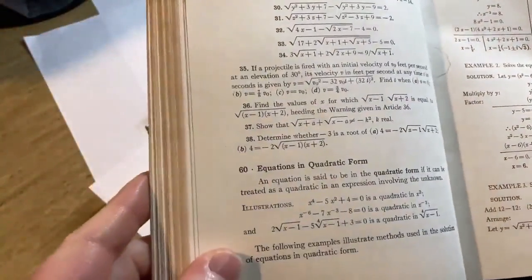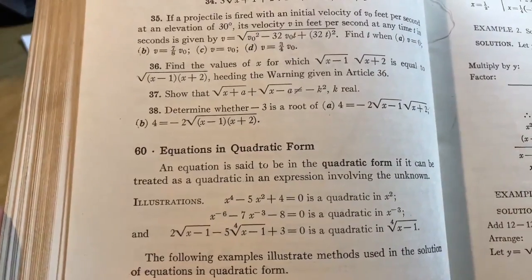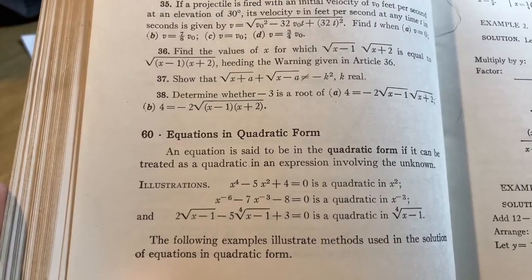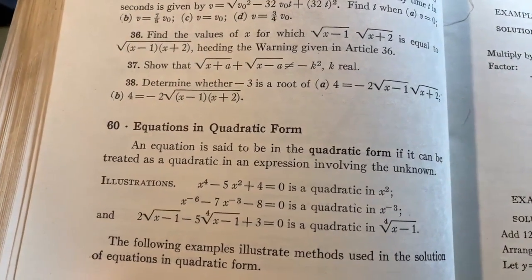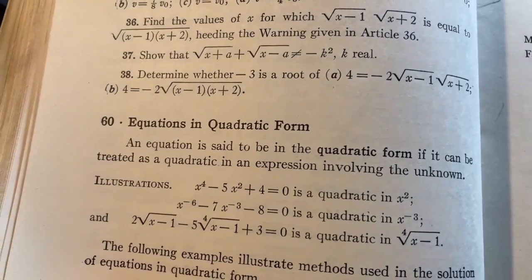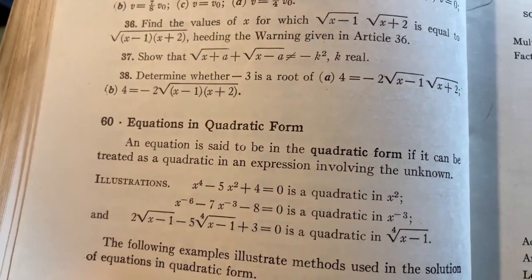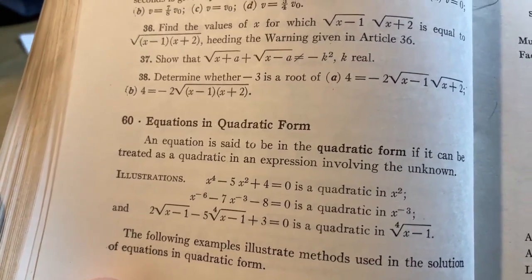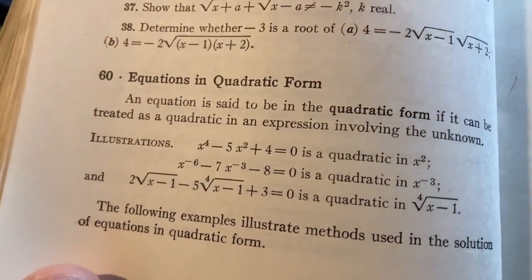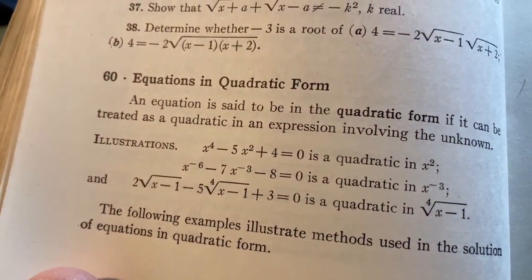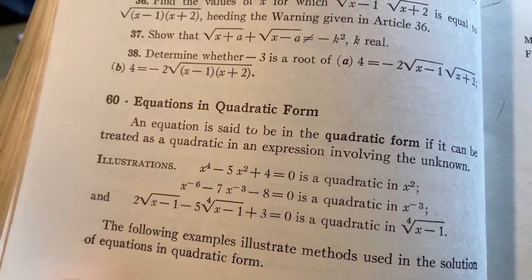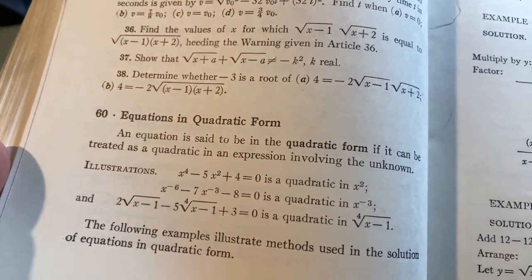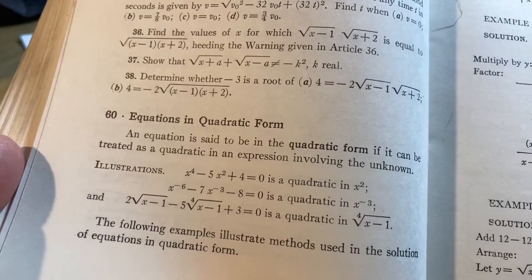So here we go. Equations in quadratic form. An equation is said to be in the quadratic form if it can be treated as a quadratic in an expression involving the unknown. Here we go. Here's some really good examples. x to the fourth minus 5x squared plus 4 equals 0 is a quadratic in x squared. Yes, it is. And oftentimes the method of solution here is to make a substitution. x to the negative 6 minus 7x to the negative 3 minus 8 equals 0 is a quadratic in x to the negative 3. That one's a little bit trickier. That one's a quadratic in the fourth root of x minus 1.